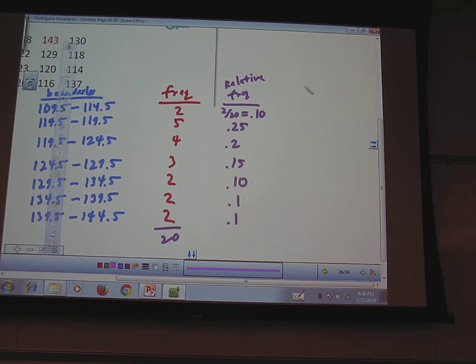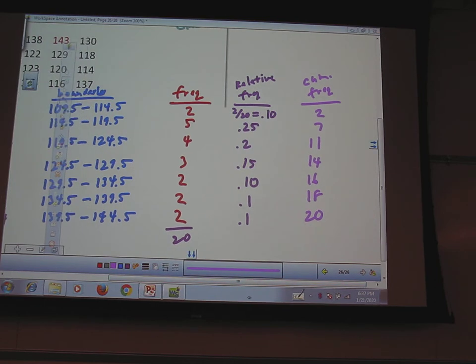And then I think I asked for cumulative frequency. This is when you accumulate. How many are in this class or before? 2. How many are in the second class or before? 7. Next, this one? 11. Next? 14. Next? 16. Next? 18. And last? 20. 20 of them are in the last class or a previous class.